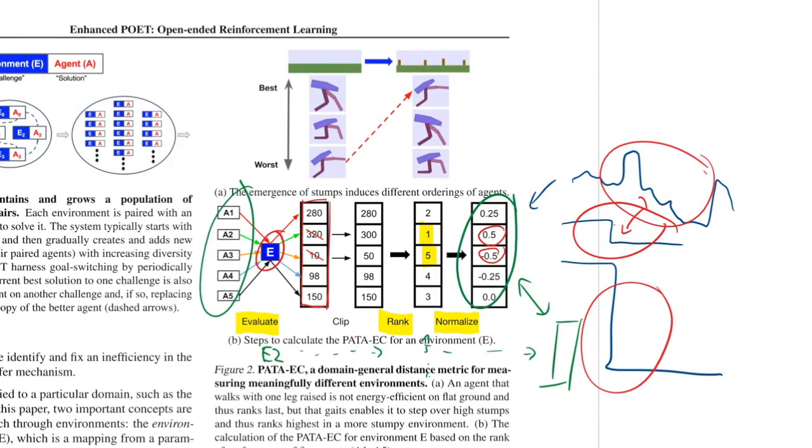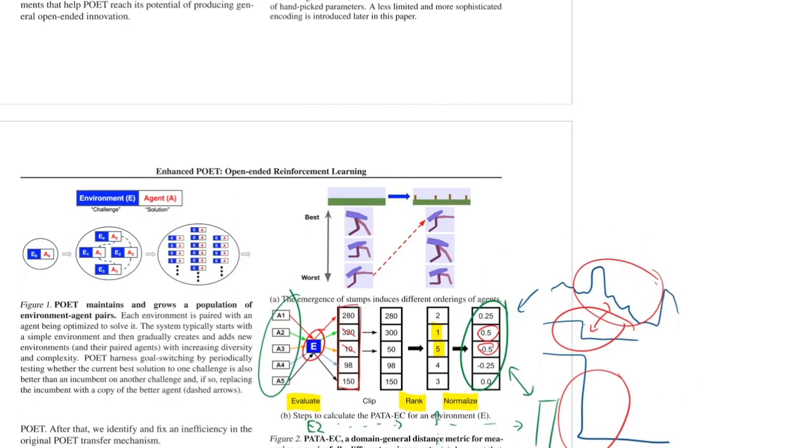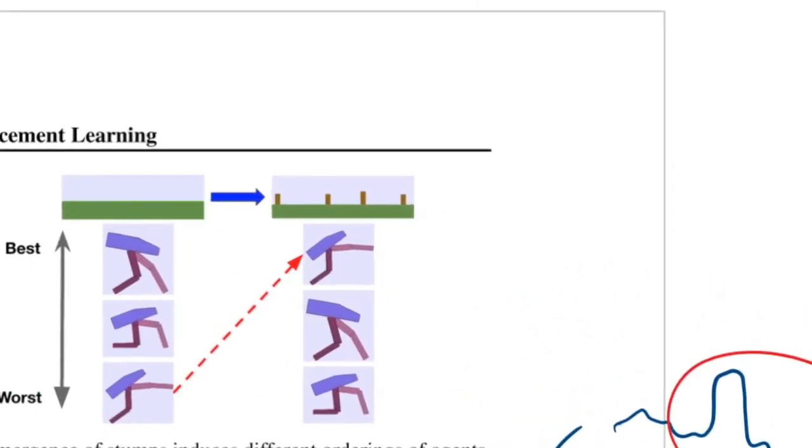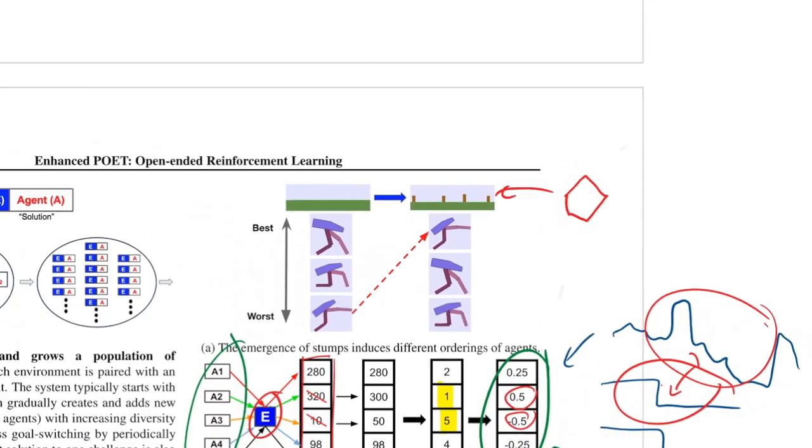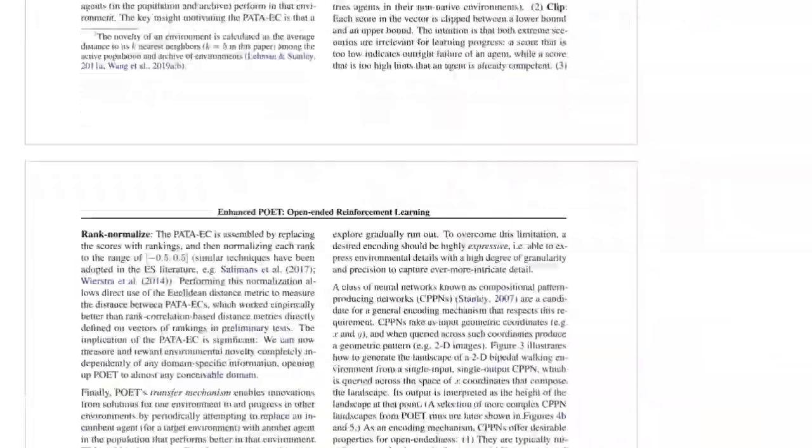So this is the first enhancement they make, that they now measure novelty in this domain agnostic way. Pretty cool so far. And what this allows them to do is actually not rely on this level generator with the five parameters to generate these levels. These levels can now be produced however they want with different generators. And that's exactly what they do.